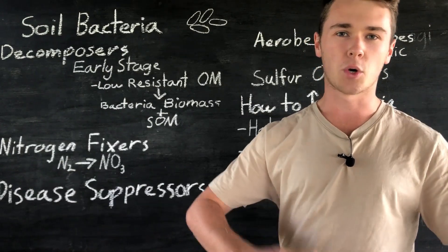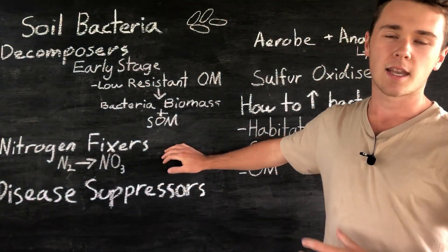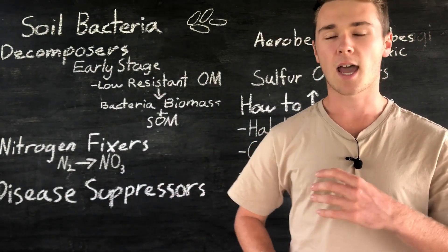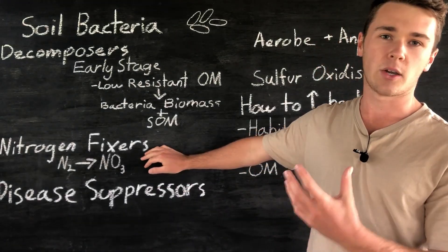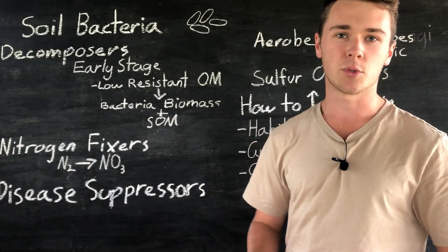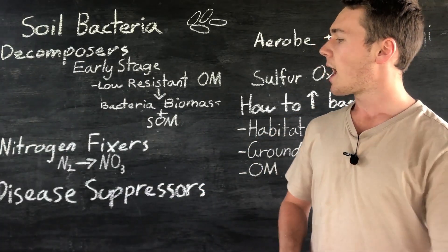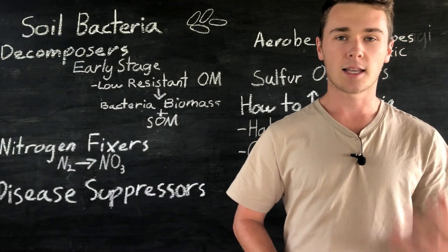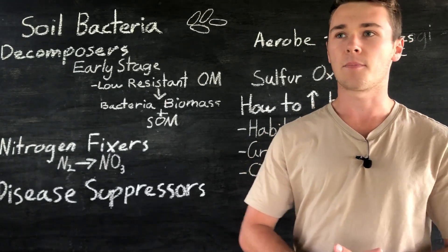The next group of soil bacteria are nitrogen fixers. Now we talked about this in the nitrogen cycle video but pretty much they convert nitrogen in the atmosphere into nitrate which is more accessible to our plants.